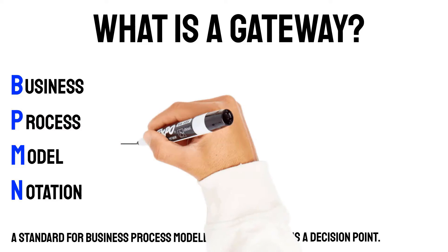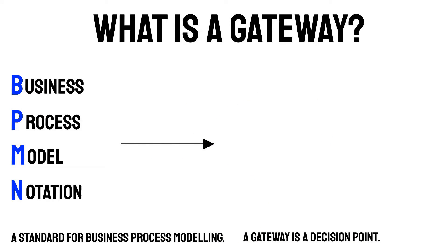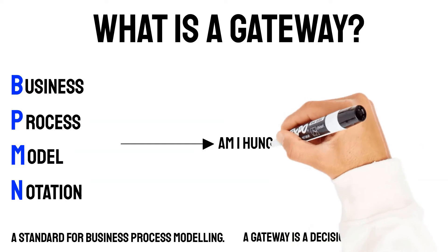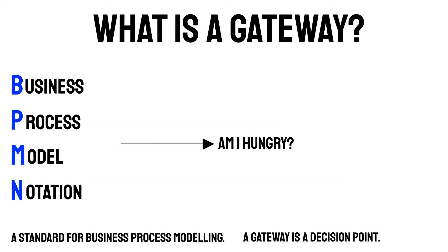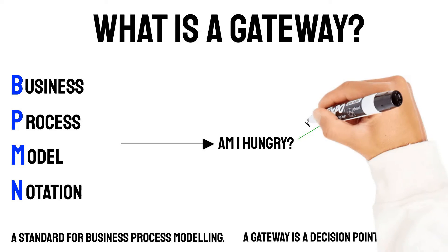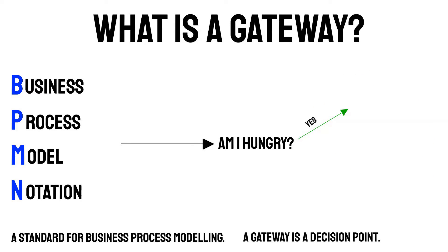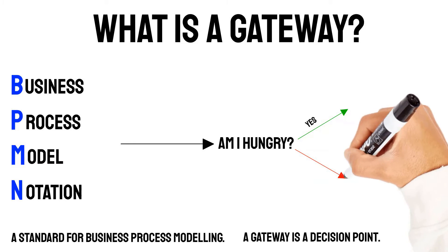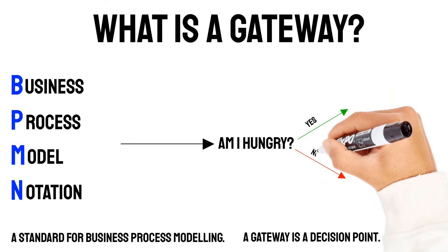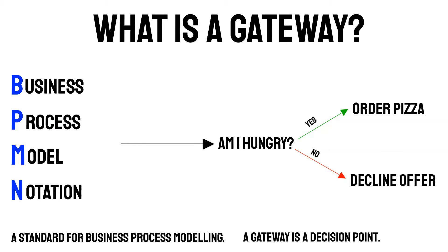Let me give you an example. When someone asks you if you also want to order a pizza, you ask yourself: am I hungry? Based on the outcome of this question, you decide whether you also order a pizza or not. This is a possible representation of a BPMN gateway because based on the condition of whether you're hungry or not, you will decide which path you will go — either ordering or not.